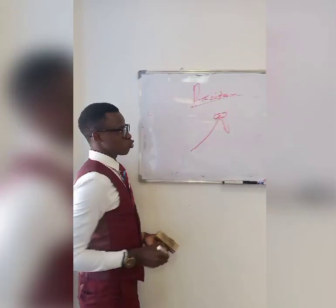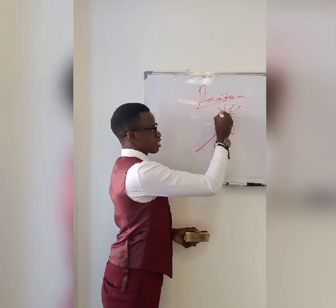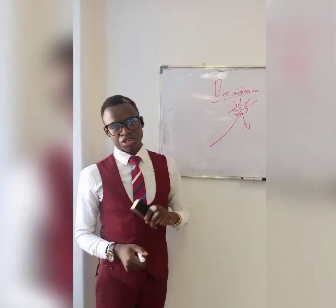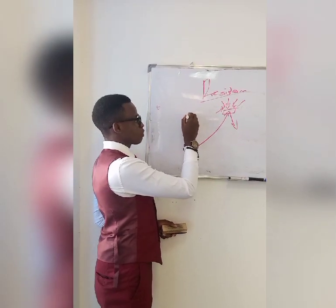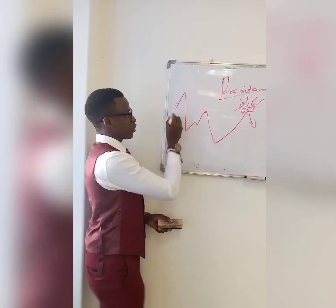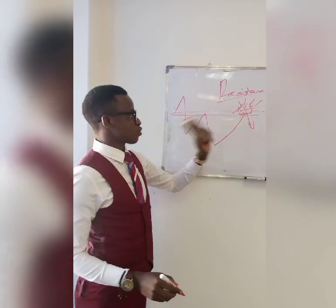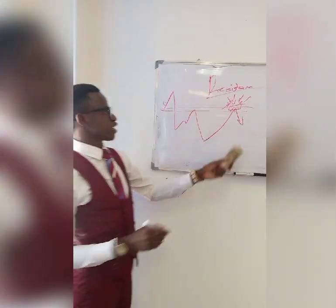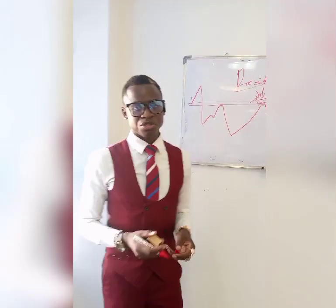How do you know it is a strong resistance? The same principles as support apply: it must have been a resistance before, it must have been broken by a big candle, and it must have been a support before. If you draw a rectangular zone there, that tells you it is a strong resistance — and you expect the price to go down because it is failing to break that zone.